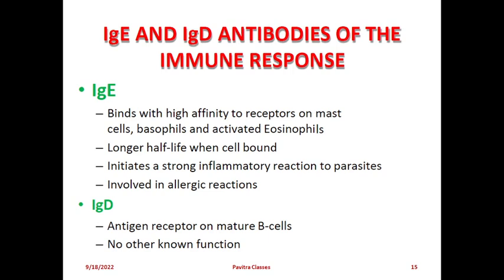IgE immunoglobulin binds with high affinity to receptors on mast cells, basophils, and activated eosinophils. It has a longer half-life when cell-bound and initiates a strong inflammatory action against parasites. It is used in allergic reactions and for activation of eosinophils against worms and parasites. IgD functions as a receptor on mature B cells with no other known function - as mentioned, research into IgD is still ongoing.